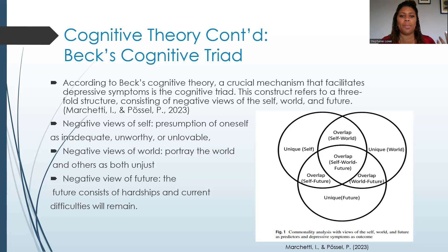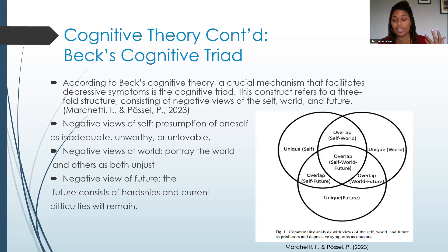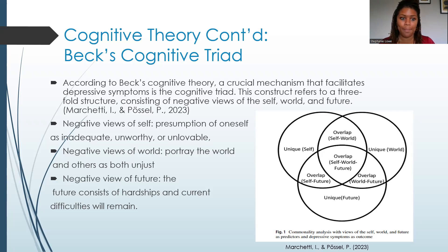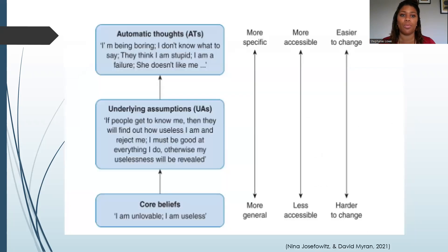Views of self include presumptions of unworthiness, feeling unlovable, inadequacies — all common things that come up with clients. Views of the world: thinking that the world, or just others, is unjust and unfair. Maybe even falling into a victim mentality, which doesn't necessarily leave them in a place of power to change. Negative views of the future — feeling hopelessness, that things are not going to be able to change or shift for them, that the future consists of hardships, and that their difficulties will really remain and their situation will not change.